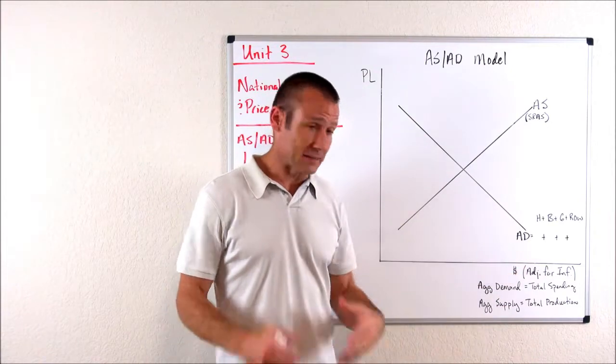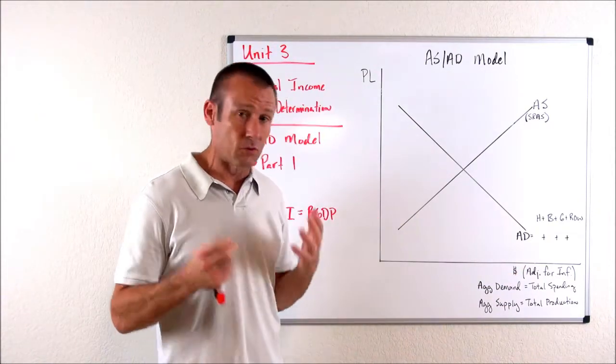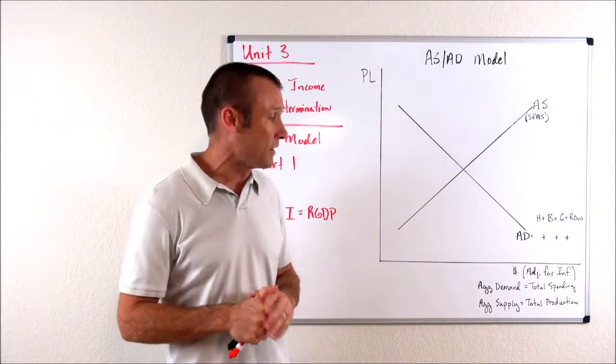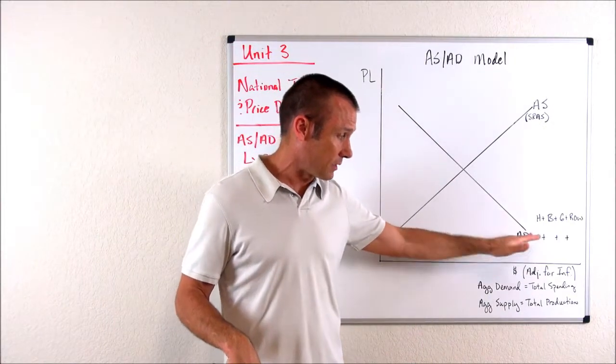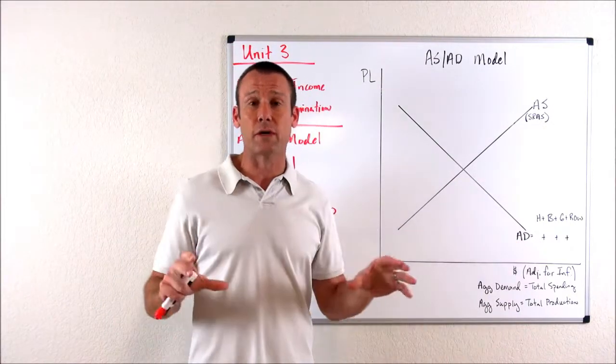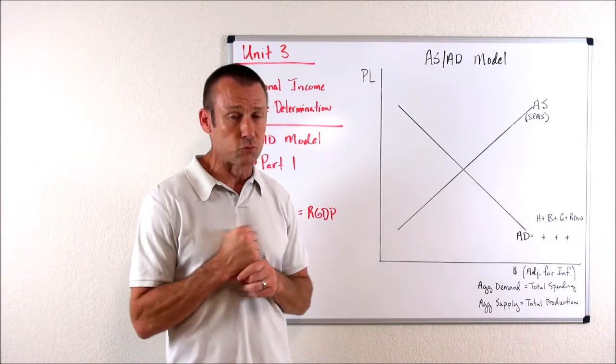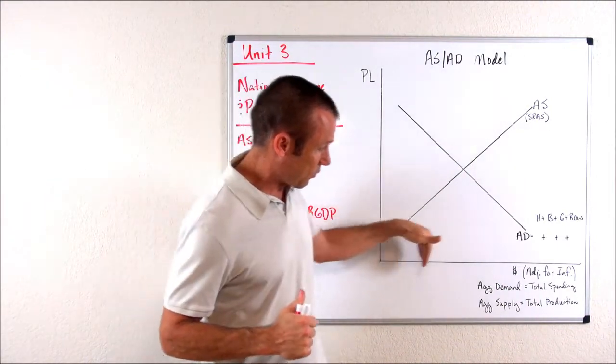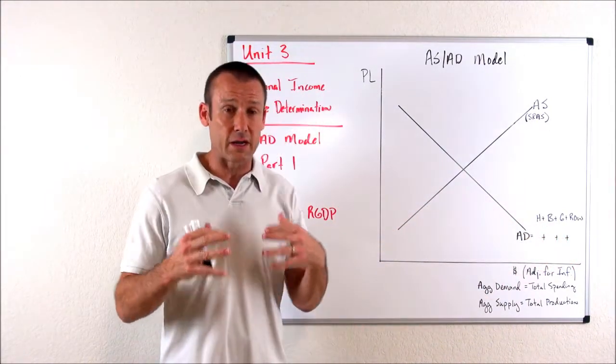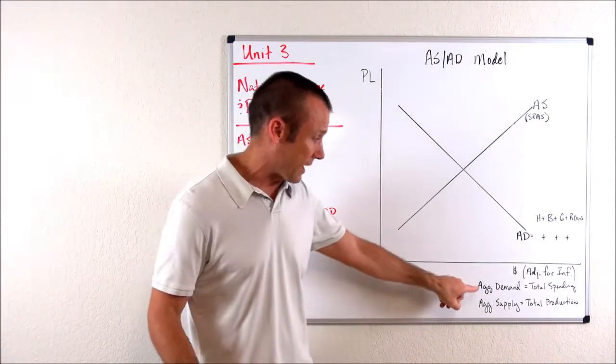Over here on the horizontal axis, I put a lot of stuff and not even really the stuff we're going to put at the very end. Eventually, we'll just start labeling the horizontal axis real GDP. But not here in part one. It's really important to understand that what we're measuring here is a bunch of stuff.